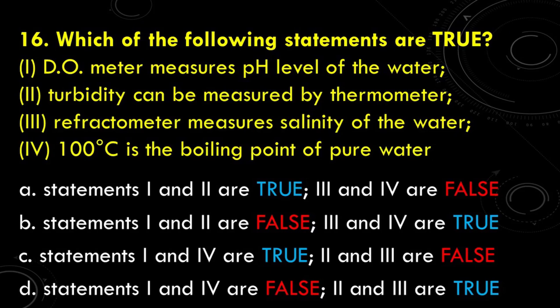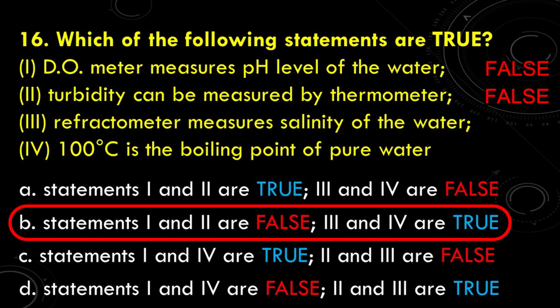Question number 16: which of the following statements are true? Statement 1: DO-meter measures pH level of the water. Statement 2: Turbidity can be measured using a thermometer. Statement 3: Refractometer measures salinity of the water. Statement 4: 100 degrees Celsius is the boiling point of pure water. The choices are: A. Statements 1 and 2 are true, 3 and 4 are false. B. Statements 1 and 2 are false, 3 and 4 are true. C. Statements 1 and 4 are true, 2 and 3 are false. D. Statements 1 and 4 are false, 2 and 3 are true. The correct answer is B: statements 1 and 2 are false, 3 and 4 are true.